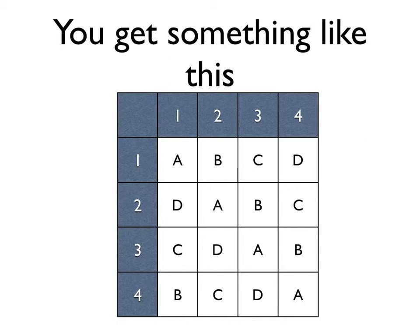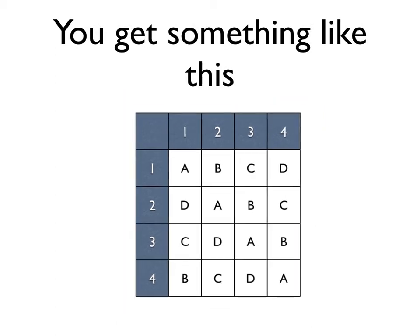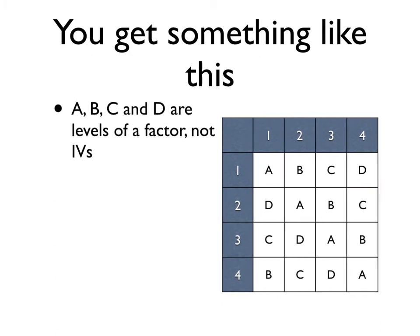And if it's 5, it's going to be 5 times 5, 25 times 5, maybe 125 cells. 6 is going to be even bigger. So yeah, it's crazy. So this is nice, this is a way to deal with this. So A, B, C and D again are levels of a factor, not independent variables. Each level occurs once in each ordinal position: the first position, second, third, fourth.